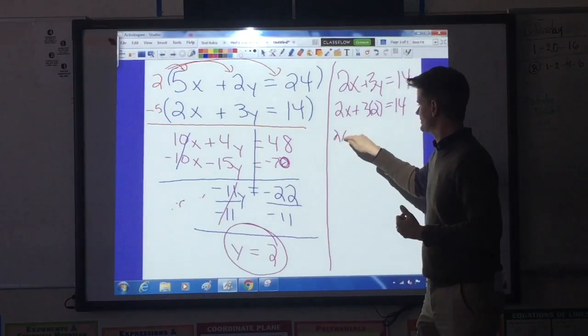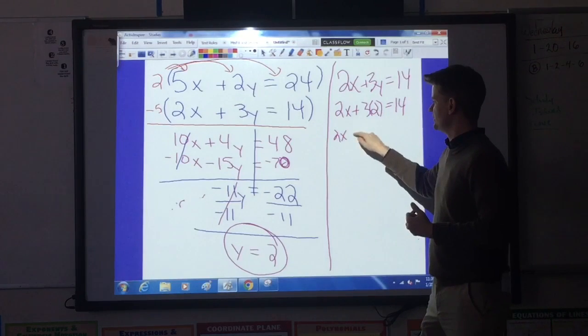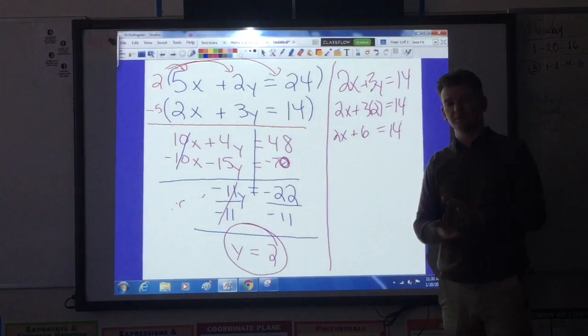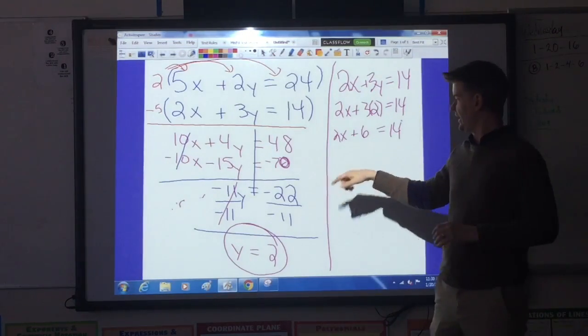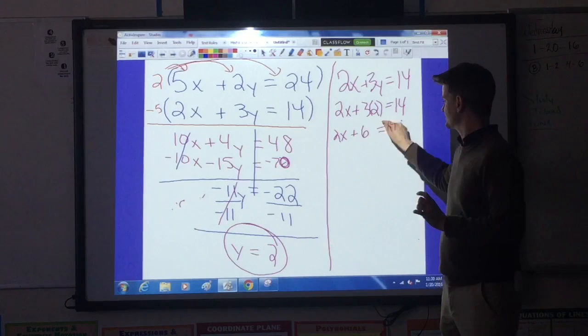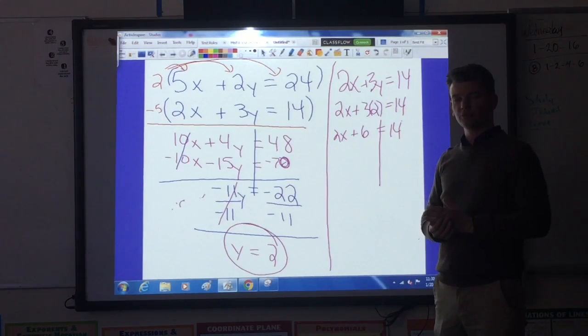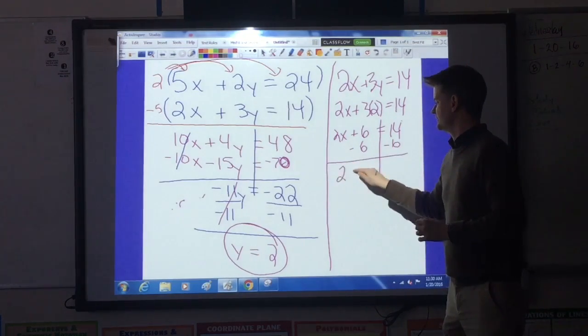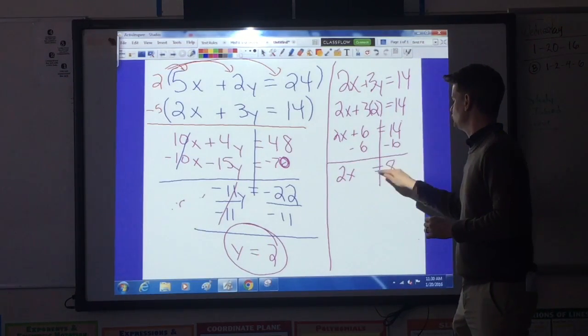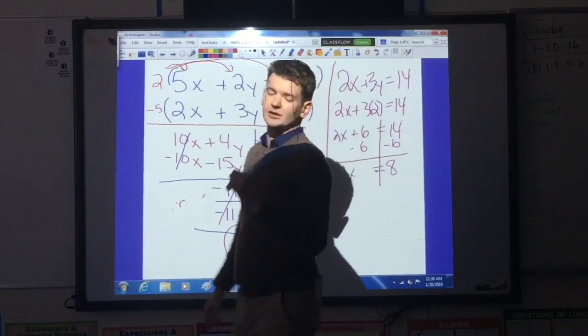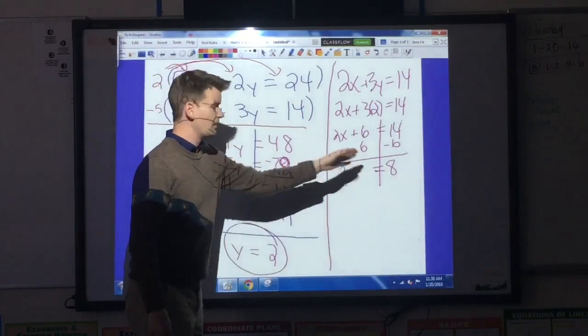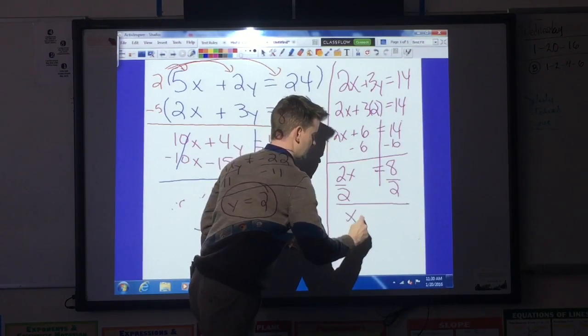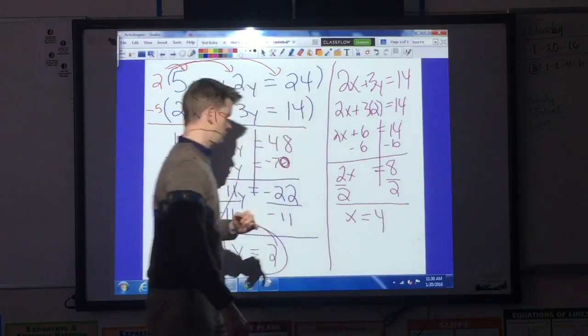I bring down the 2x. I perform my multiplication. 3 times 2 is 6. Still equals 14. Now that I'm here, this is a two-step equation. I need to get the x term alone. So I have to get rid of the positive 6. I use inverse operations to do that. I'm going to subtract 6 from both sides. That's going to give me 2x is equal to 8. One more step to go. I divide both sides of this equation by my coefficient, which is 2. And I have the other half of the answer, x is equal to 4.